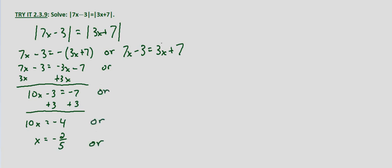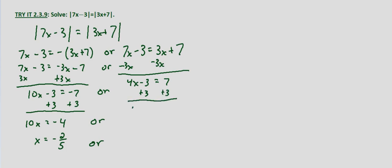Now we'll solve the right-hand side equation. Subtract 3x from both sides: we get 4x minus 3 equals 7. Add 3 to both sides: 4x equals 10. Divide both sides by 4, and we get x equals 10 fourths, which is x equals 5 halves. So tentatively, our solutions are x equals negative 2 fifths or x equals 5 halves.